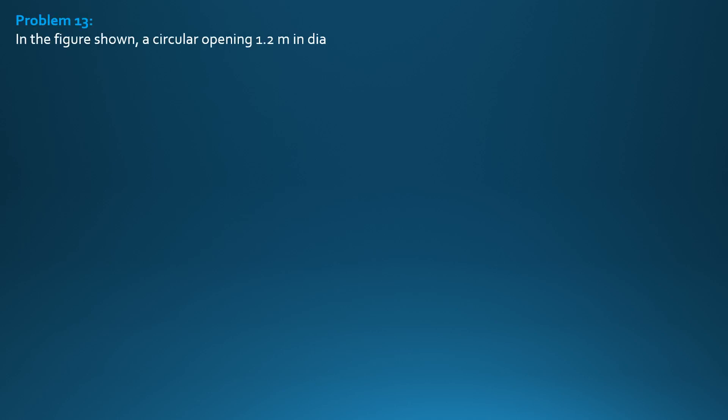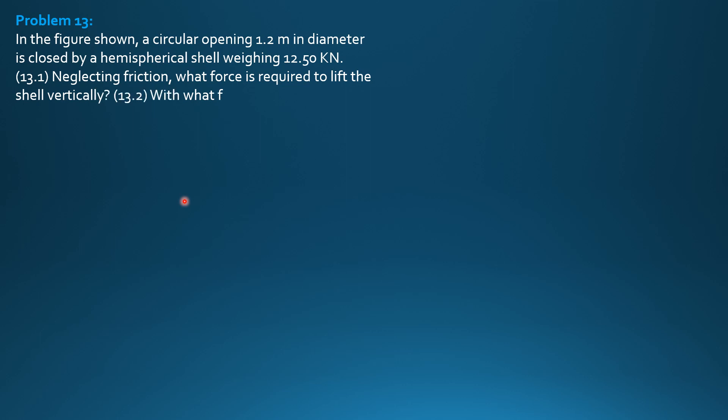In the figure shown, a circular opening 1.2 meters in diameter is closed by a hemispherical shell weighing 12.5 kilonewtons. Neglecting friction, what force is required to lift the shell vertically? Then, with what force is the shell held against the seat? Then, if coefficient of friction is 0.3, what vertical force is required to initiate lifting of the shell?